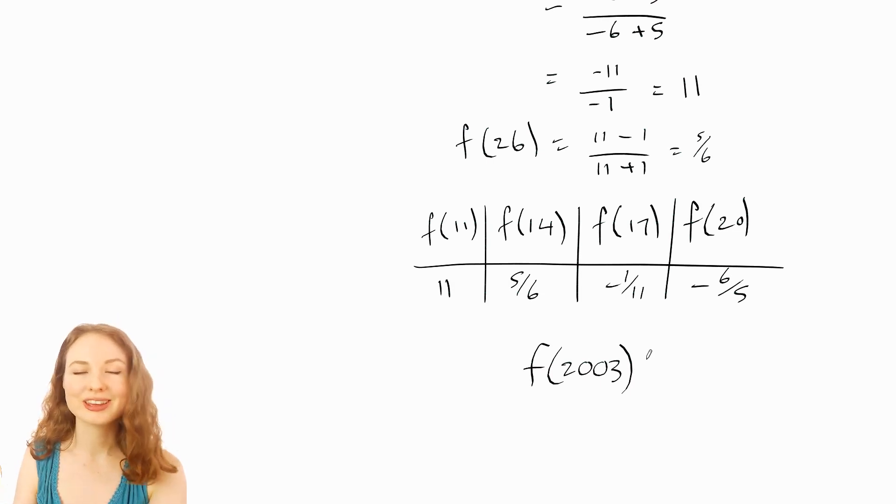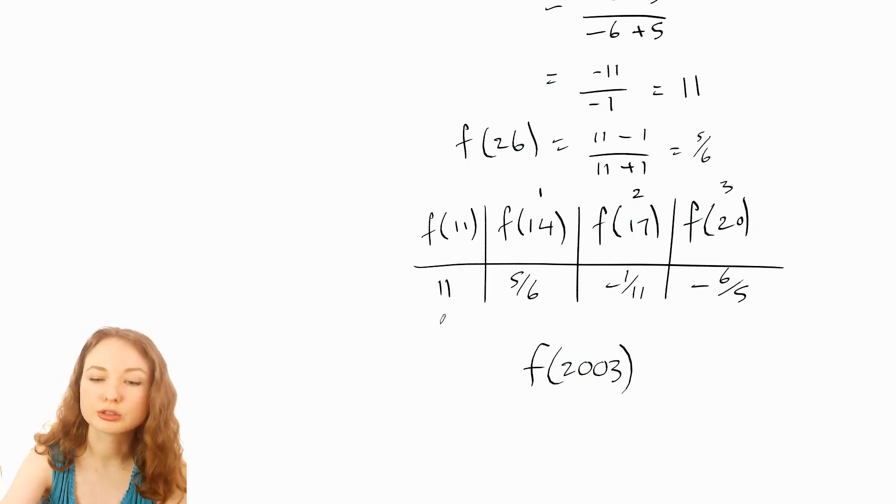So the way that I would tackle it is I would try to work out how many threes have been added to 11 to make 2003. As in this is one 3 added, this is two threes added to 11, this is three threes added, and so on. And then the f of 23, which is four threes added, was 11 again. And then you'll have five threes added, six, seven, eight, and so on. And it keeps wrapping around like that.